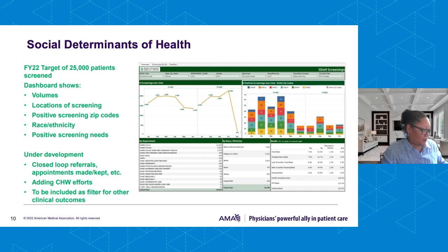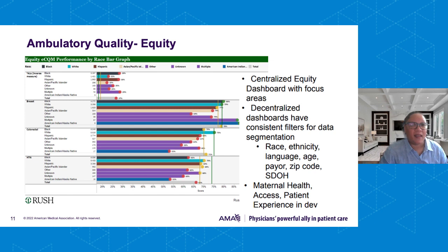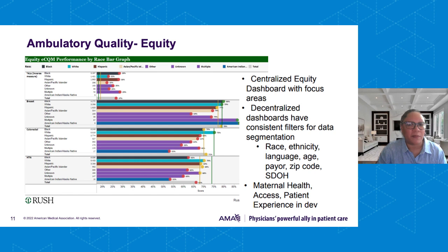We're currently working on this data visualization dashboard to include closed-loop referrals — whether appointments were made and kept. We're adding our community health worker efforts to capture their impact, as well as creating other filters for clinical outcomes. We're also taking a look at ambulatory quality as it relates to equity, with a centralized equity dashboard featuring filters for race, ethnicity, language, age, payer, zip code, and social determinants. We're also looking at maternal health access and patient experience.